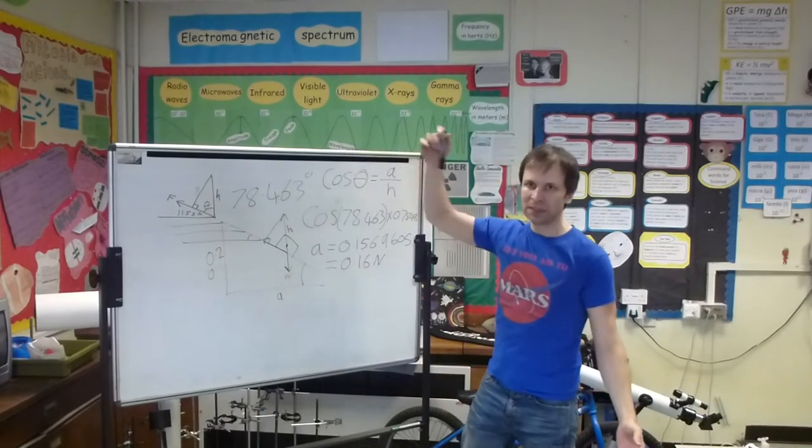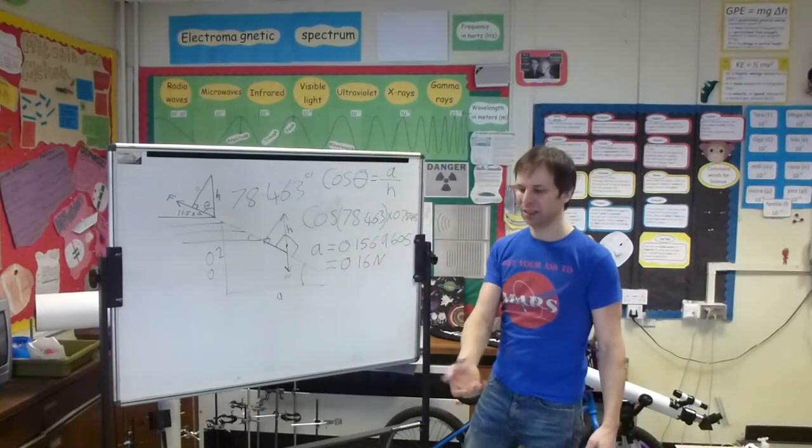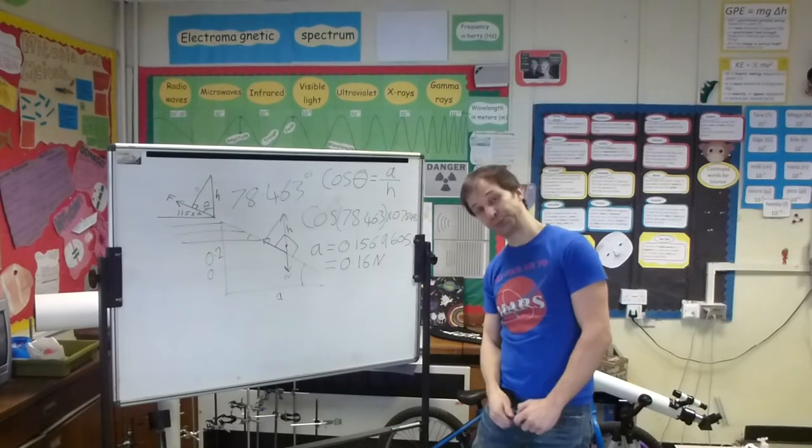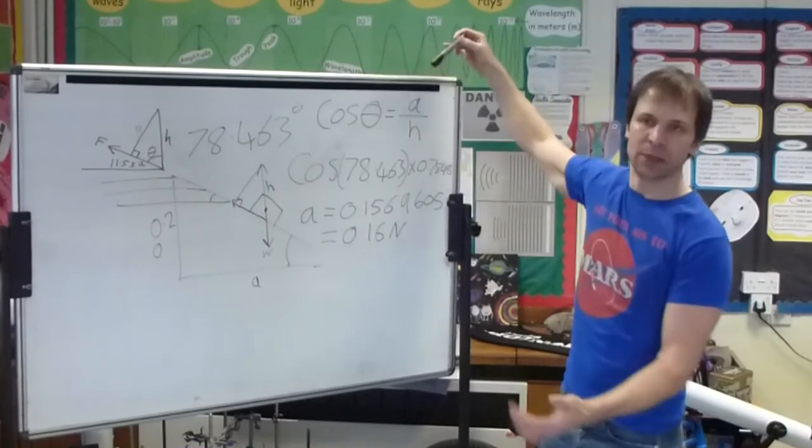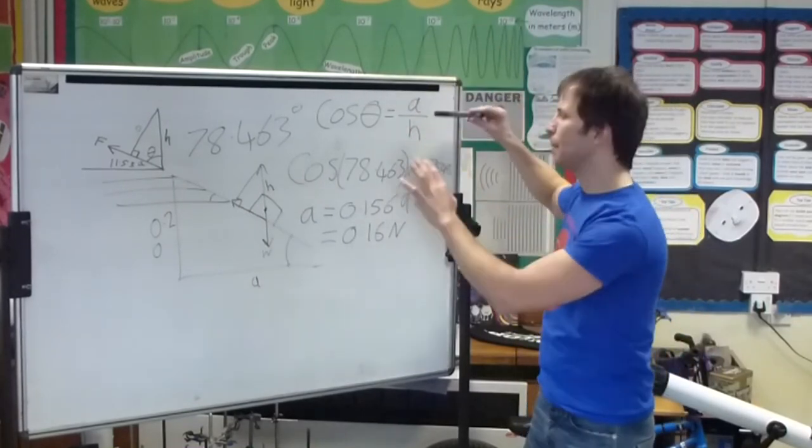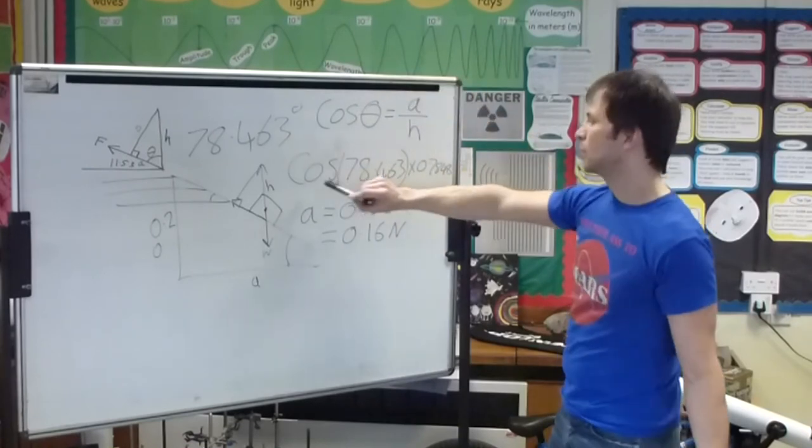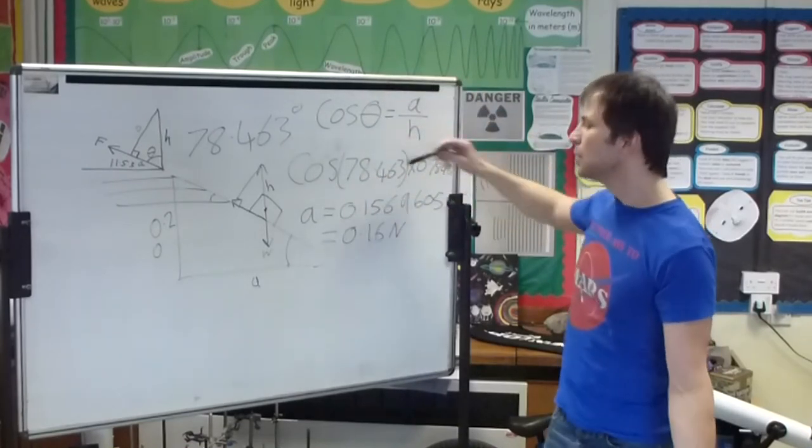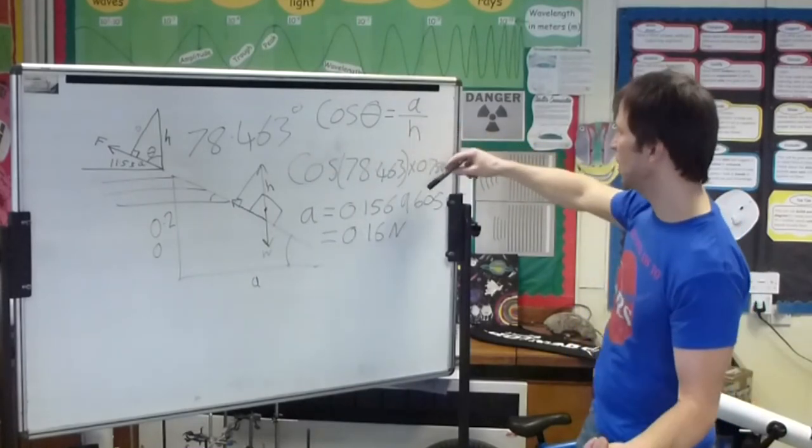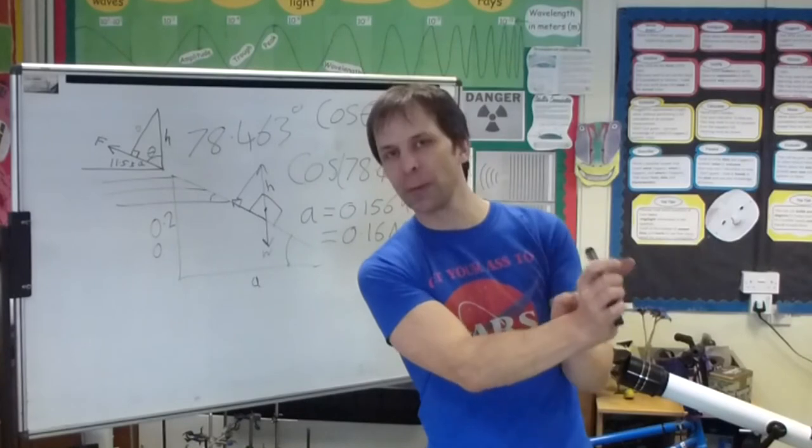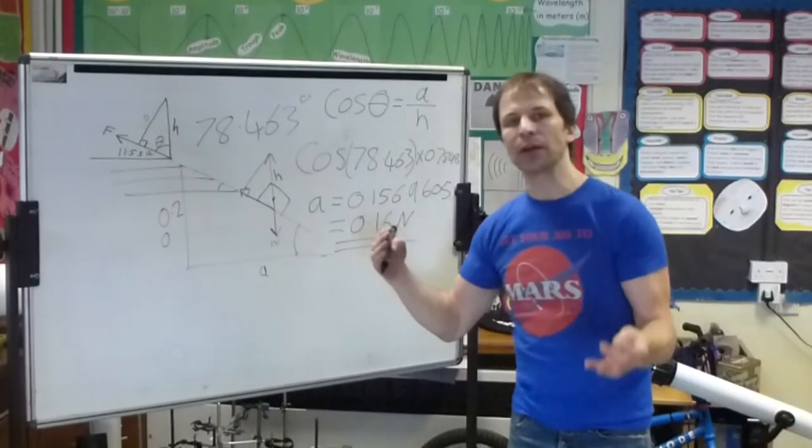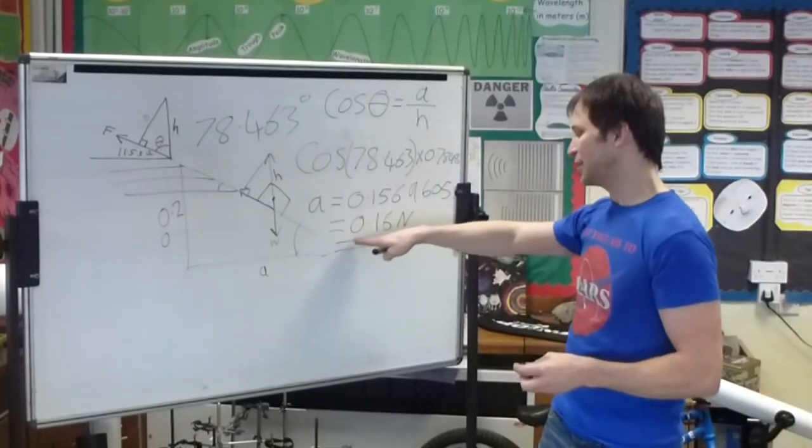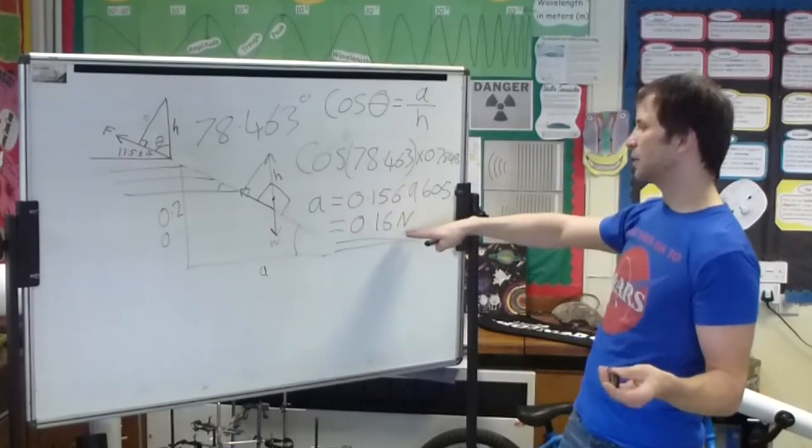So as you can see here, cos theta equals adjacent over hypotenuse, you times the hypotenuse by both sides, and you end up with cos of the angle times the weight force. Now that gives you the adjacent at 0.1569605, but because I was measuring at best on there of a centimetre position, I'm just going to go for two decimal places. So I'm going to give the component of the weight force that is contributing to friction along the slope is 0.16 newtons.